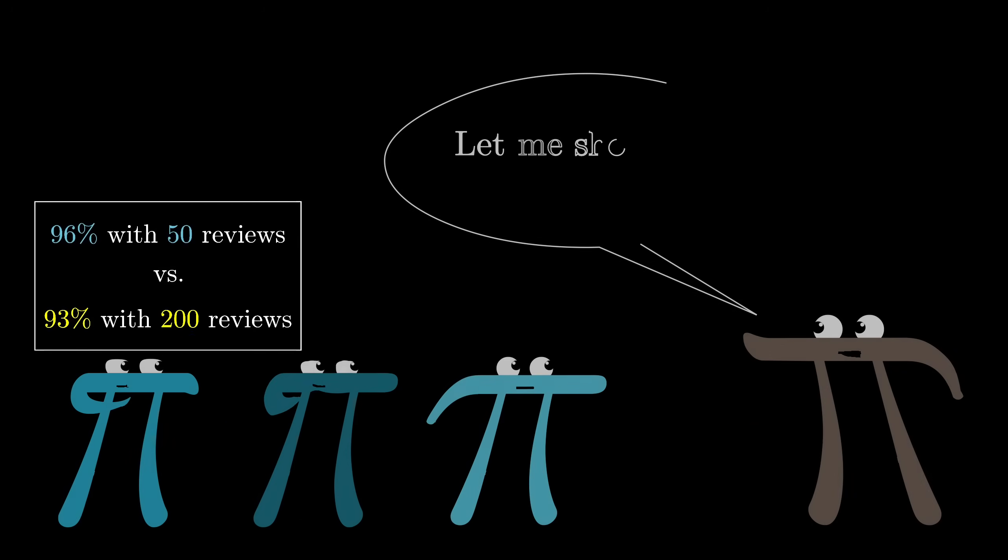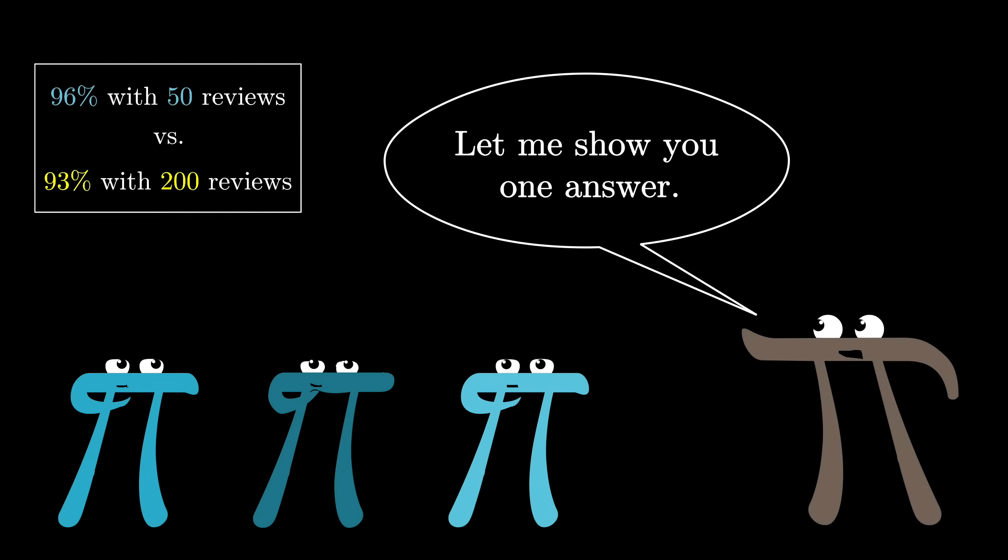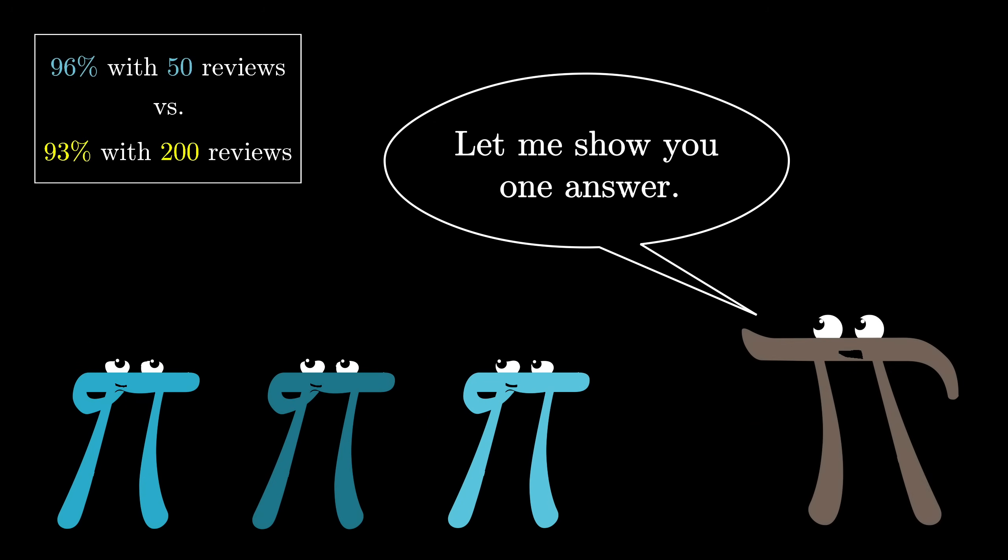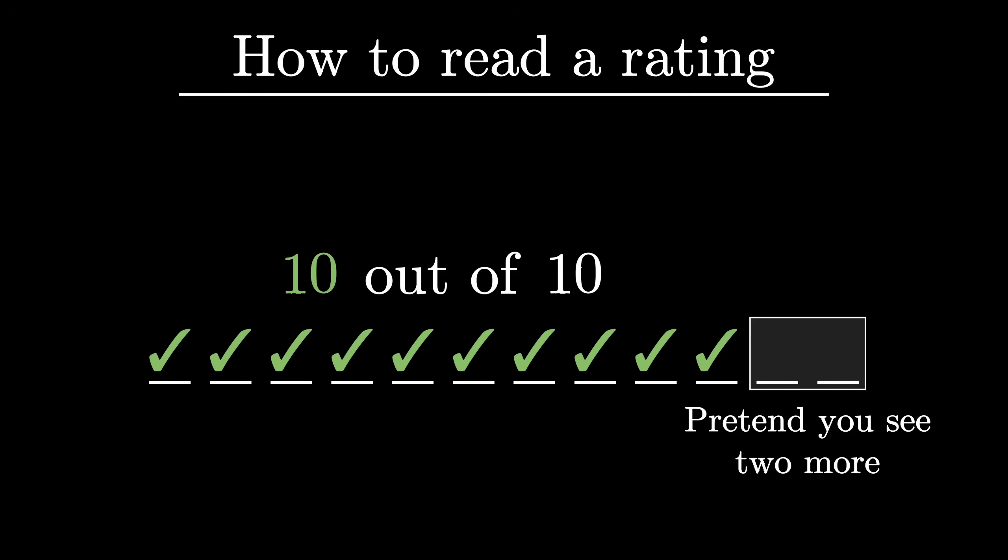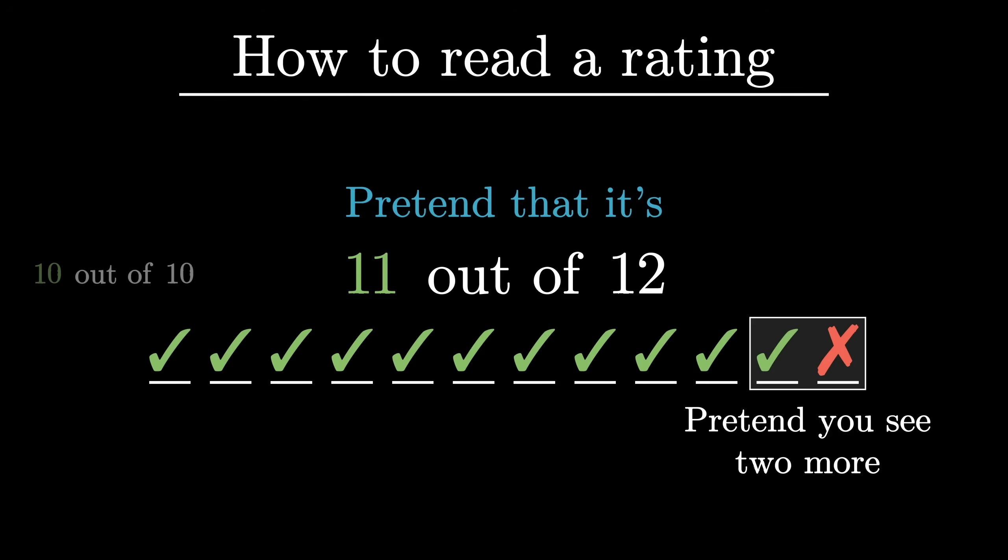To throw you a bone before we dive into all the math, let me show you what one of the answers turns out to be, since it's delightfully simple. When you see an online rating, something like this 10 out of 10, you pretend that there were two more reviews, one that was positive and one that's negative. In this case, that means you pretend that it's 11 out of 12, which would give 91.7%. This number is your probability of having a good experience with that seller.